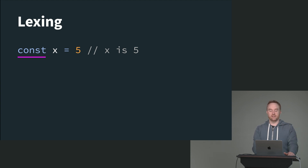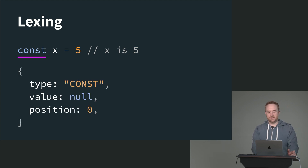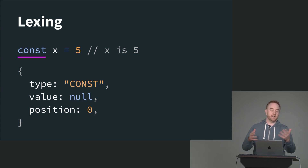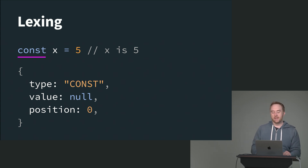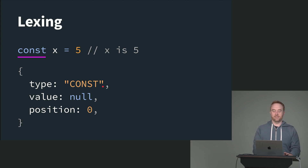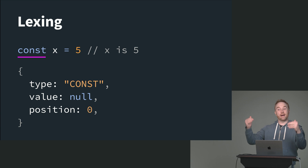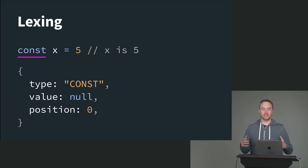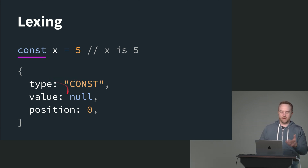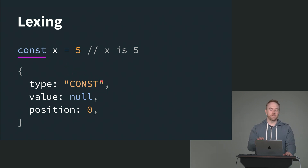The lexer sees 'c-o-n-s-t' and says: I know what that is — this is a const token. This is how we would represent that in our language: a JavaScript record object. The compiler is going to be written in JavaScript, or a subset of JavaScript. So we'd have an object with a field called 'type', and the type is going to be 'CONST' in all caps. The reason I put these in all caps is to indicate these are tokens, not the actual syntax — so when you see all caps, that means it's the name of the token rather than the actual syntax.